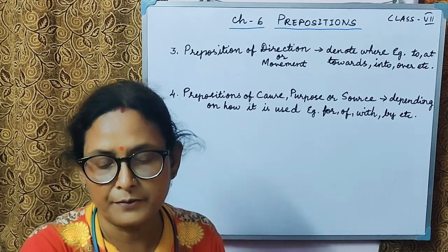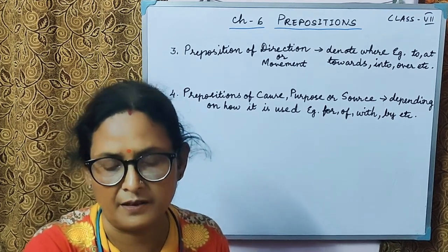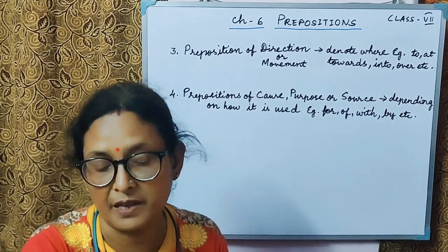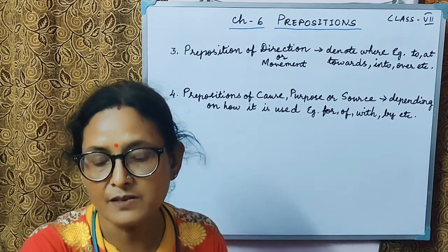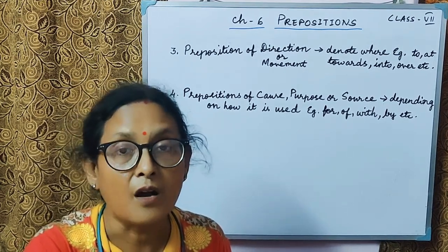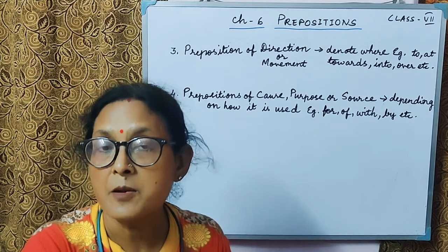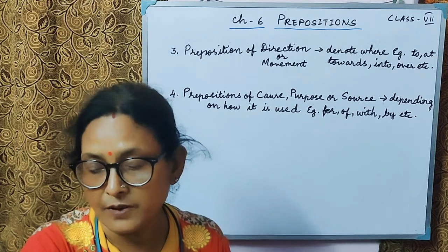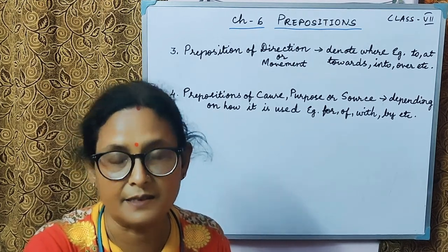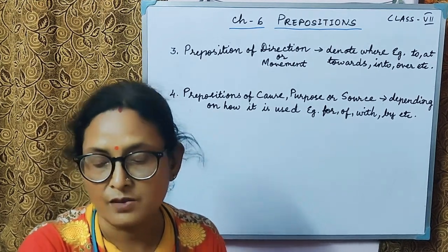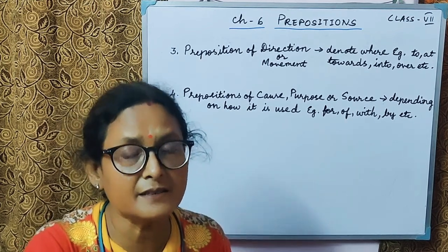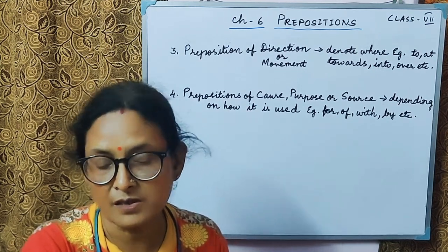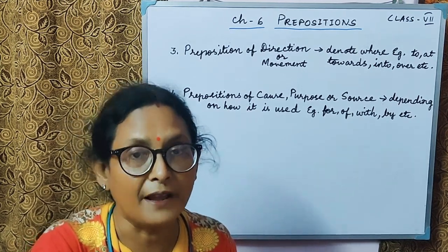Your book gives two prepositions here. The first one is 'by.' By is used in the passive voice to talk about the doer of an action, and it is mostly used in passive voice constructions. So when you say 'the thief was beaten by the residents with sticks,' the sentence is in the passive voice and 'by' is used to indicate the doer of the action.